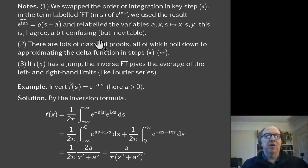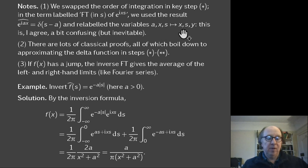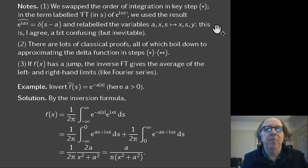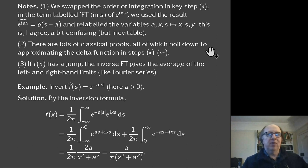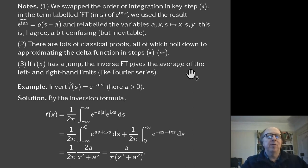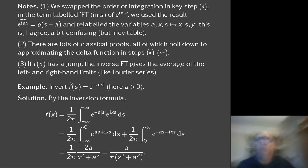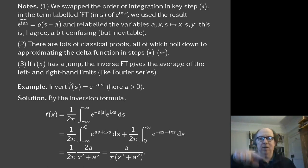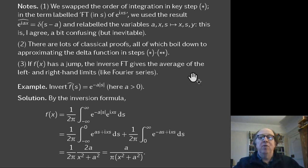A couple of notes on the proof: we needed to change the order of integration, and there was a key relabelling of variables that requires working through carefully yourself. Also, if f has a jump discontinuity at a point, the Fourier inversion gives the average of the left and right limits — exactly as in Fourier series, which is a reassuring sign of consistency between the two theories.